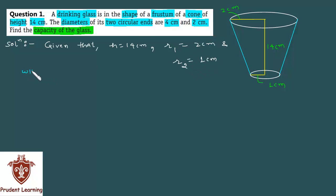Now we know that volume of a frustum is given by one third of π h into r1 squared plus r2 squared plus r1 r2, where h is height of the frustum, r1 is radius of the upper circular end and r2 is radius of the lower circular end.